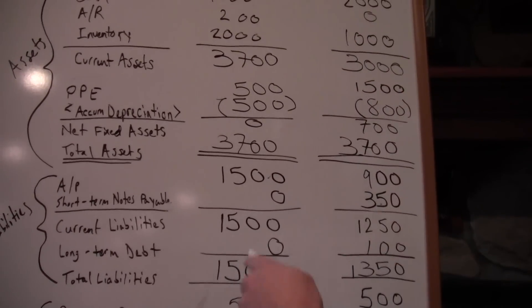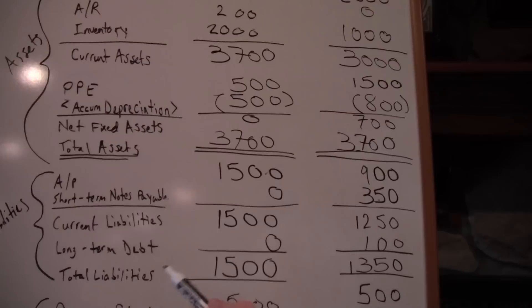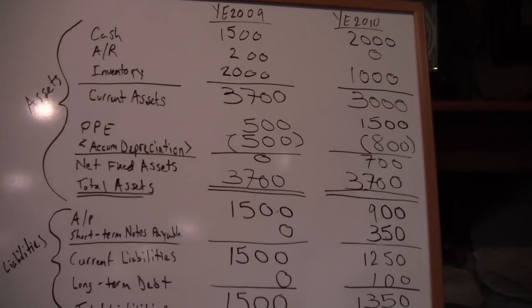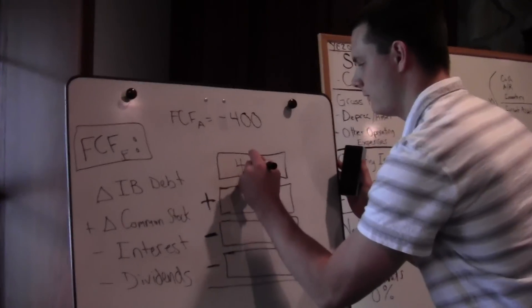But in 2009, we didn't have any short-term notes payable or long-term debt. So that's a $450 change in interest-bearing debt. I'll write that in our box: $450.